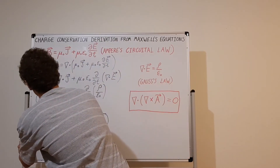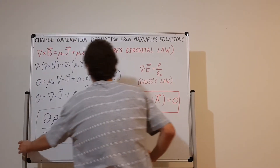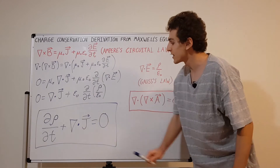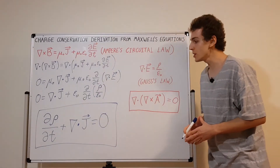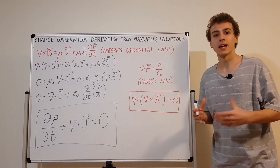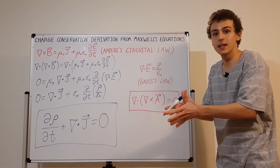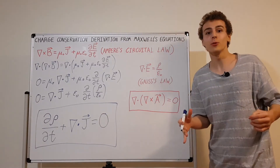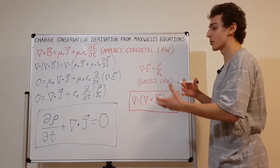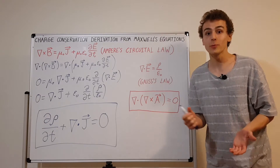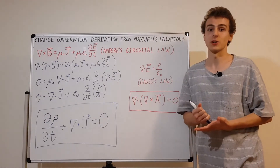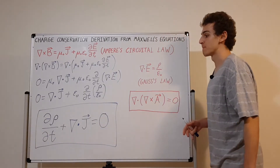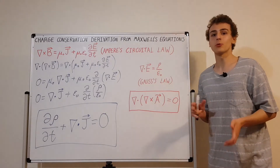Does this look familiar? If you've studied fluid mechanics, this looks just like the continuity equation, which says you can't destroy any fluid. Fluid flowing into a region has to either flow out or accumulate — you can't have fluid created from nowhere. This is mass conservation in fluid mechanics, and analogously, in electromagnetism this represents charge conservation.